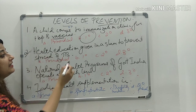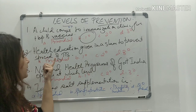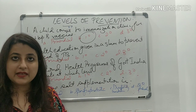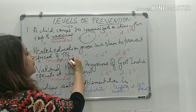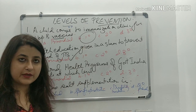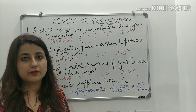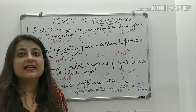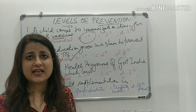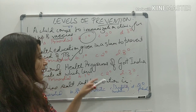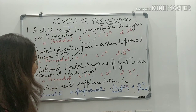Second MCQ: health education given in a slum to prevent spread of TB. Any form of health education becomes your primary level of prevention — it is a mode of intervention. So health education given to prevent anything becomes a primary level of prevention.